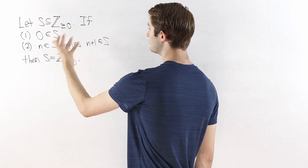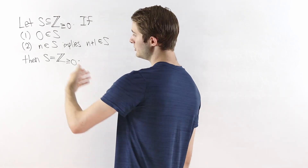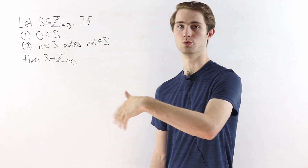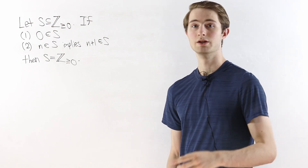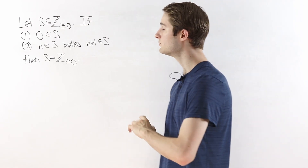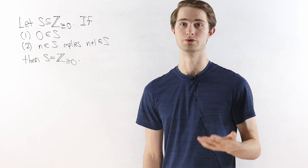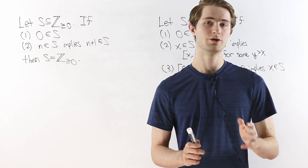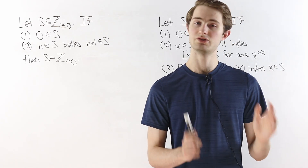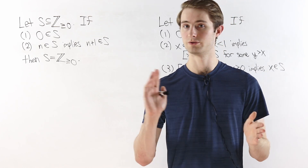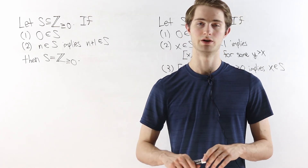This formulation of induction seems to rely on the fact that we're working with the integers and we can count them — zero, one, two, three, four — to get through the entire set. But in fact there's a way to do induction even when we're working with the real numbers, where there are uncountably many elements to prove this statement. In this video I'm just going to focus on real induction on the closed interval from zero to one.